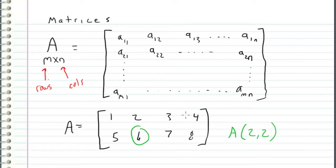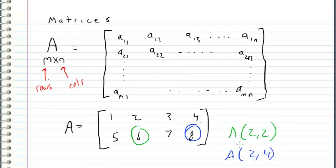And similarly, if I wanted to know this number right here, I can refer to that as A_24. This notation works for all of these numbers, and typically that's how we will reference a particular entry in a matrix.